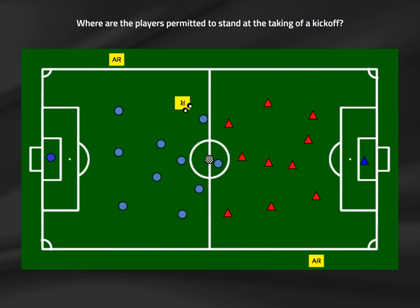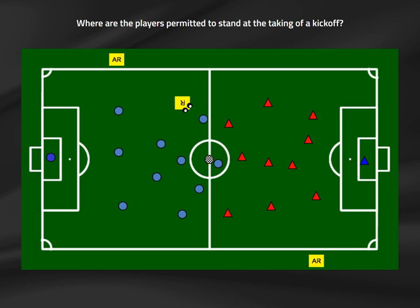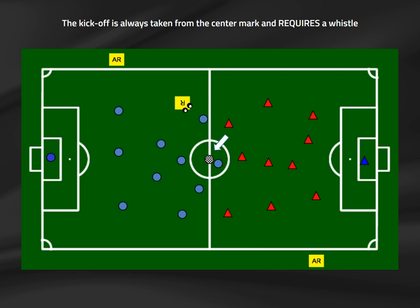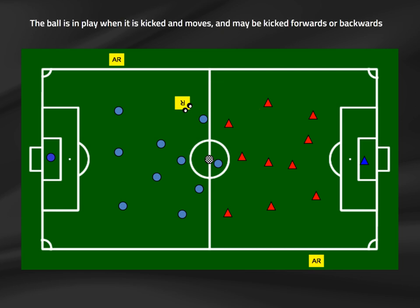Players must be properly positioned when a kickoff is used. The kicking team's players must all be in their own half behind the halfway line and may not cross it until the ball is in play — except one player who must be the one taking the kickoff, who may stand in the opposing half. The defending team's players must be in their own half and outside the center circle. The kickoff is always taken on the center mark, and the referee must blow the whistle to permit the kick. Verbal comments are not acceptable.